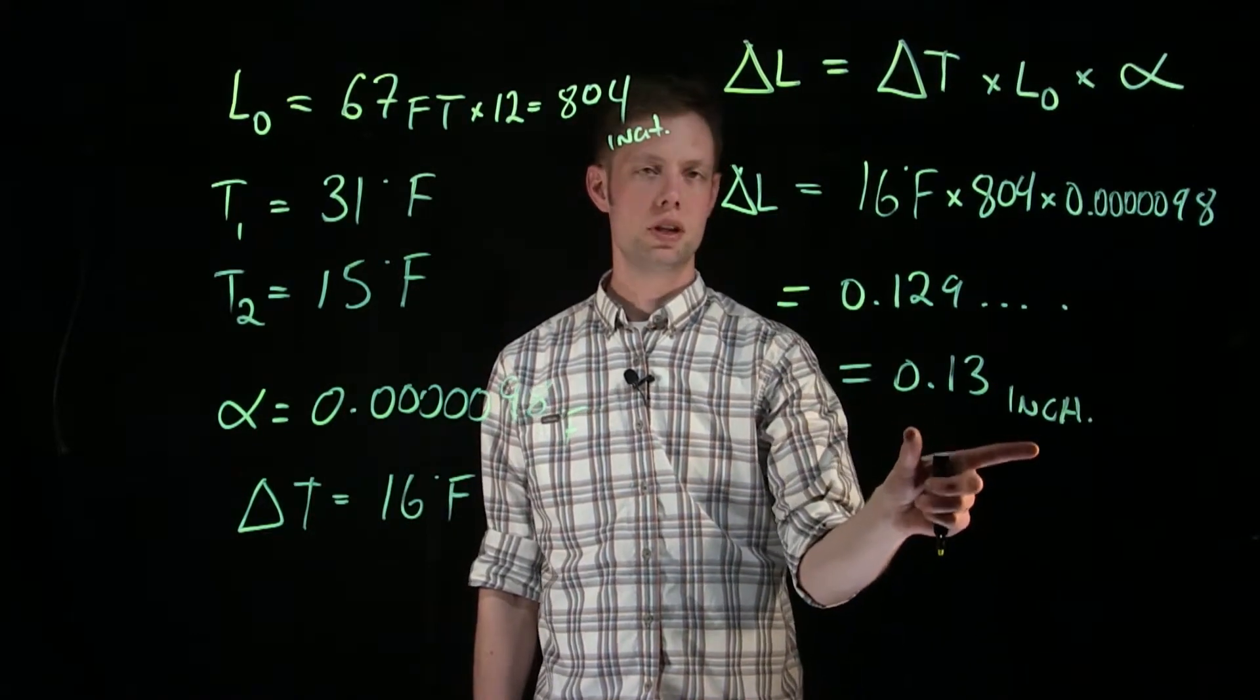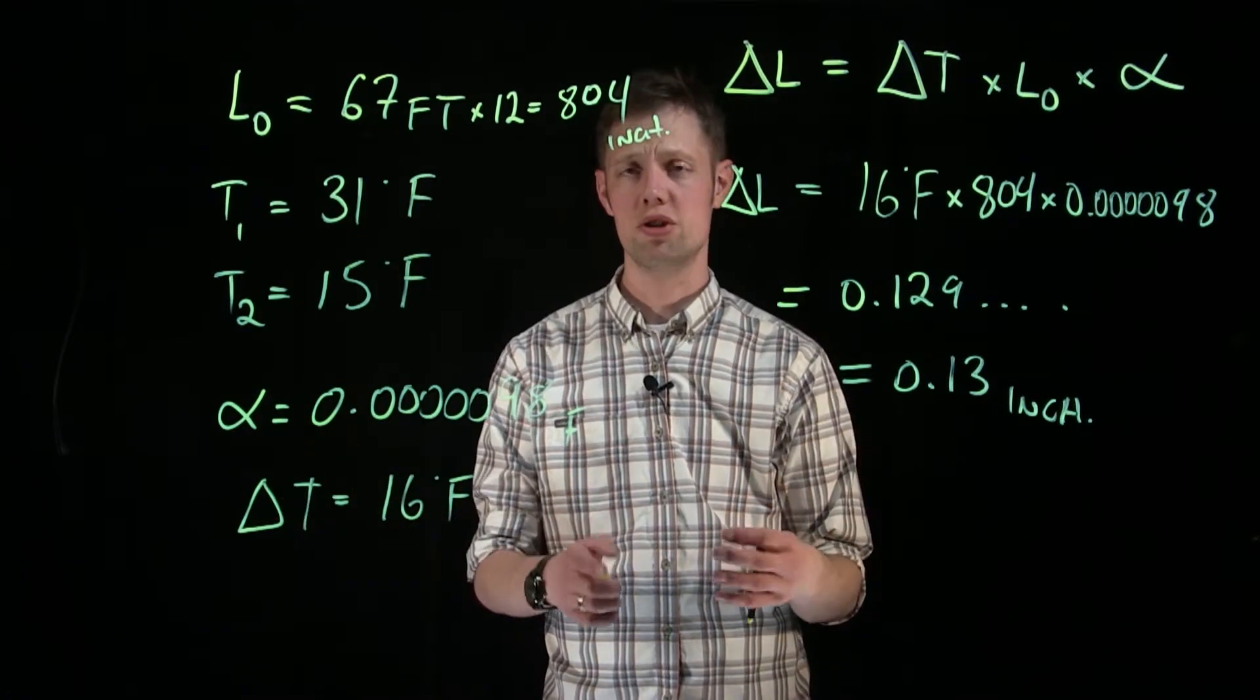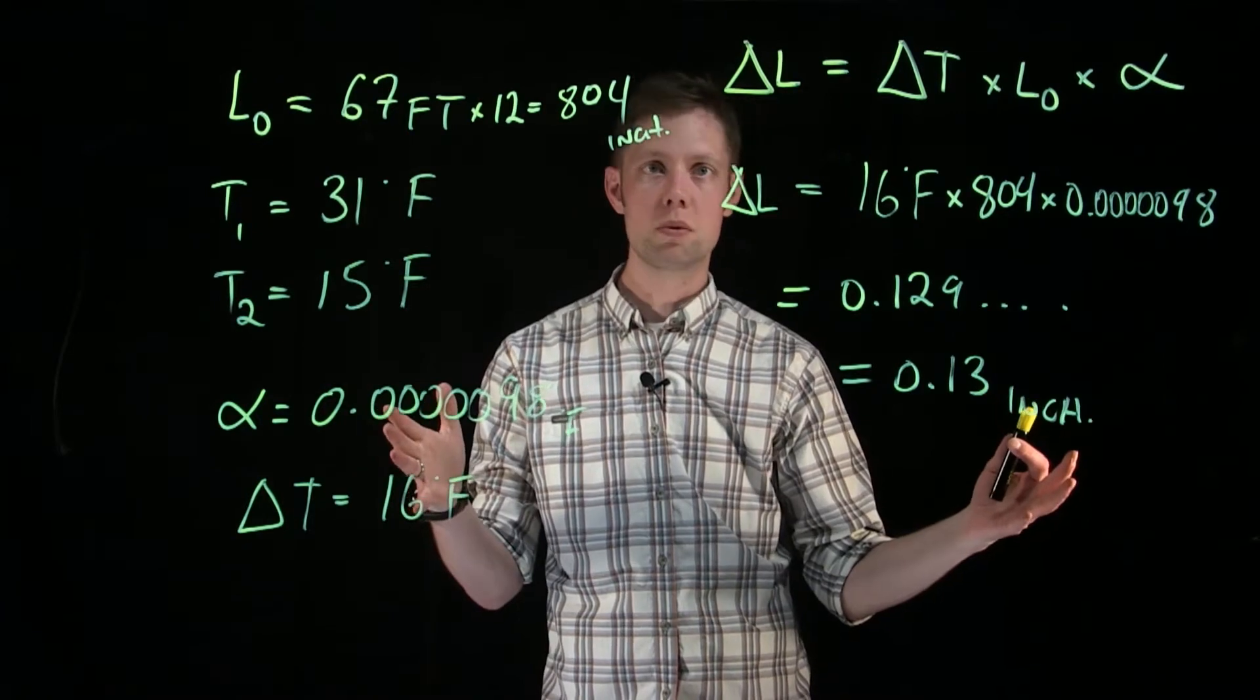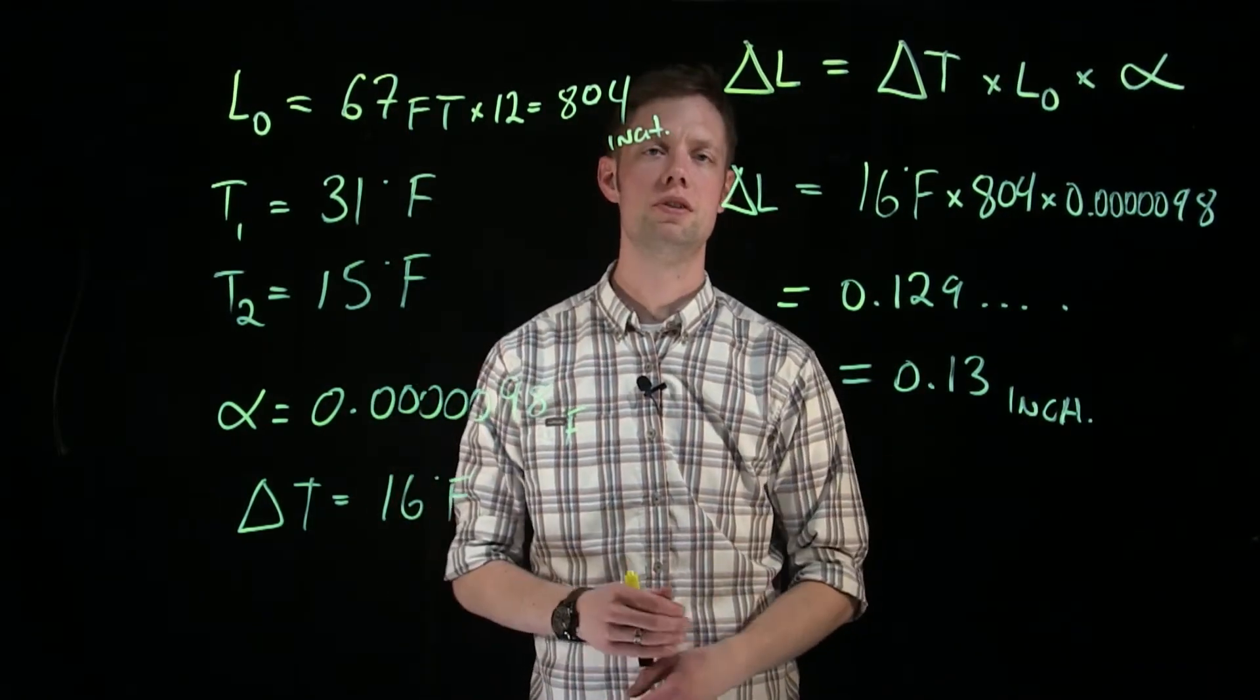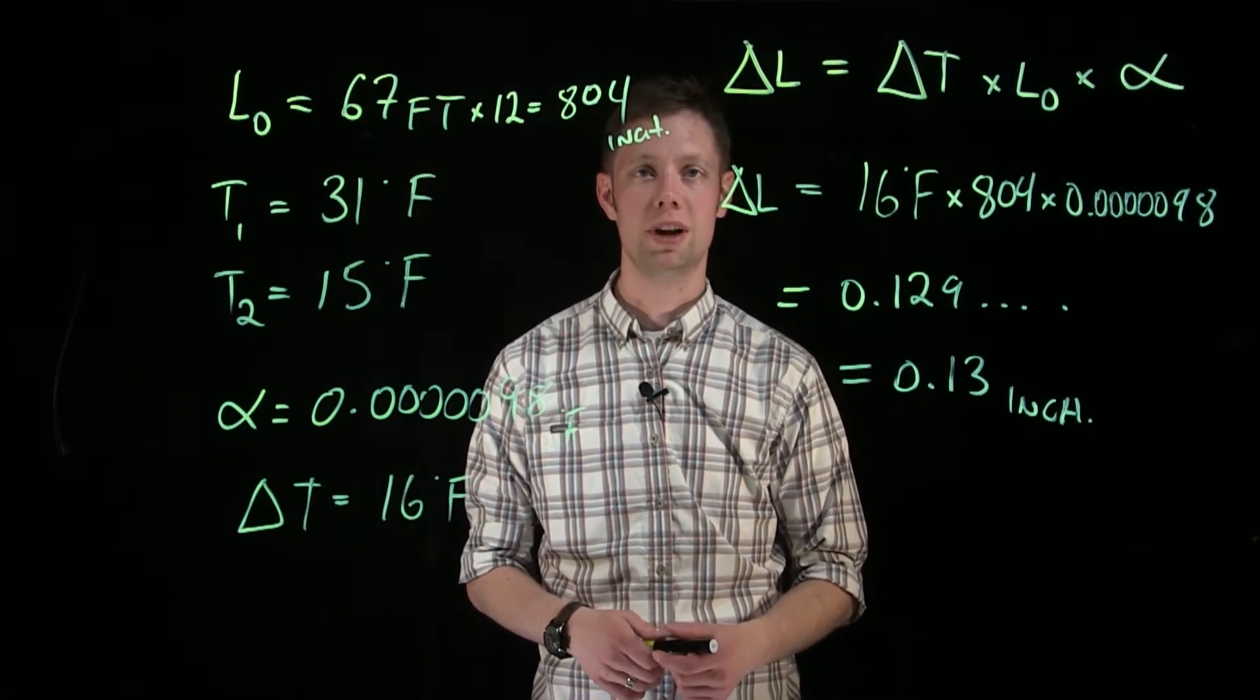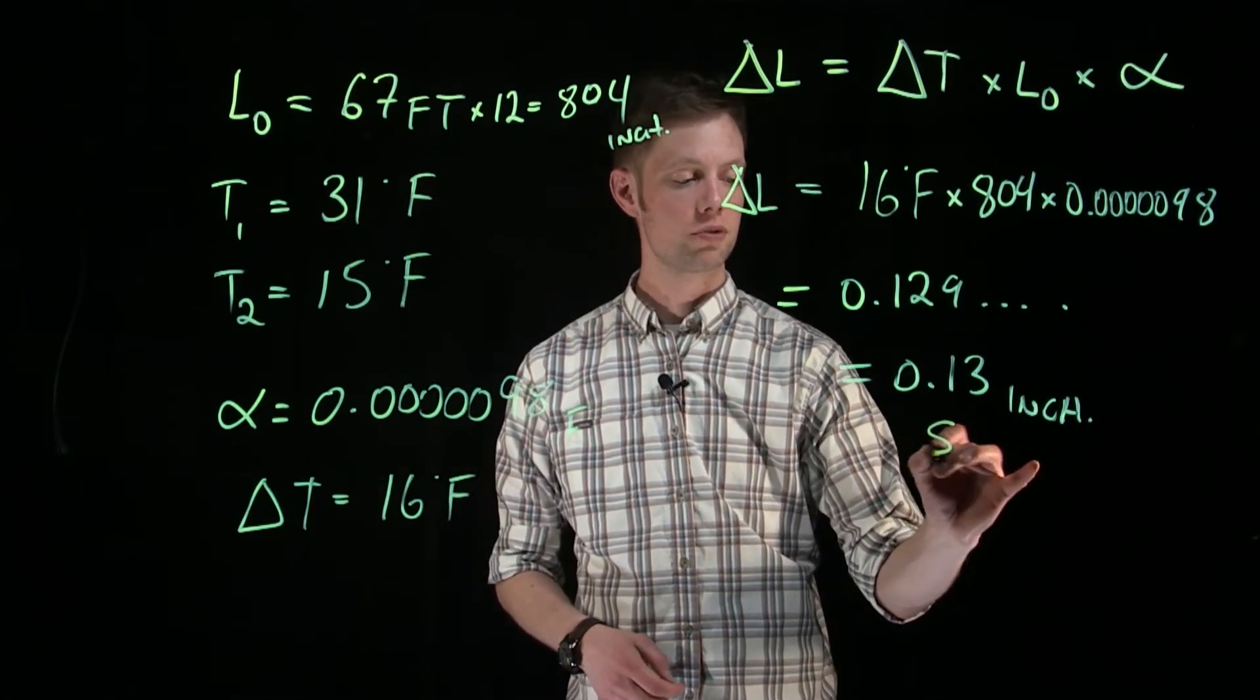Now this is the length change. We need to determine if this is an expansion or a contraction. Because we started relatively warmer, and we cool that copper pipe off to 15 degrees Fahrenheit, we actually cause that copper pipe to shrink. So in this case, we're going to get some shrinkage.